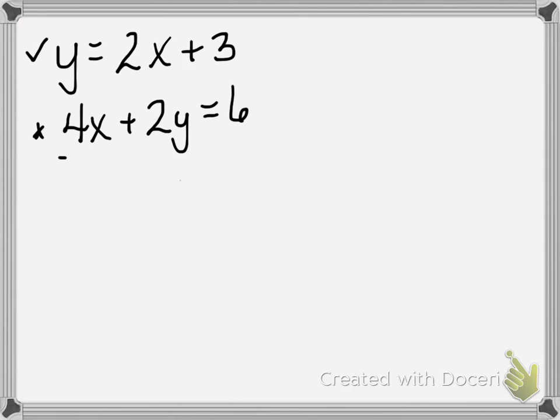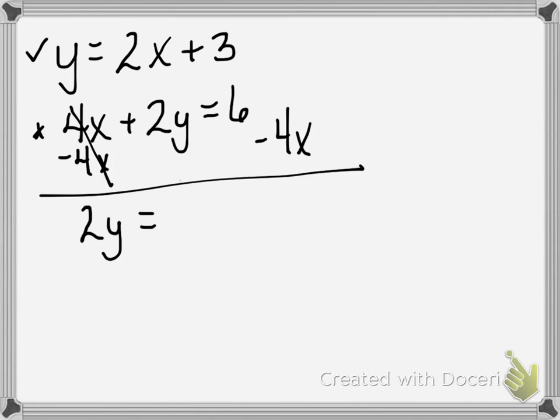So my first step is going to be to subtract 4x from both sides. It's a positive 4x, so to get rid of it, I subtract 4x. I want to bring it over here. To the other side, whatever I do to one side of the equation, I must also do to the other. So I'm left with 2y equals negative 4x and a positive 6.